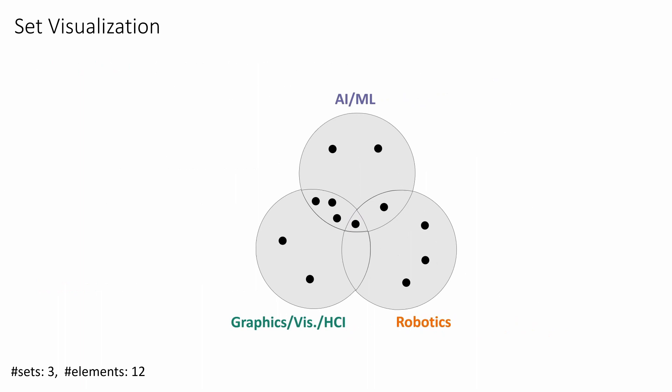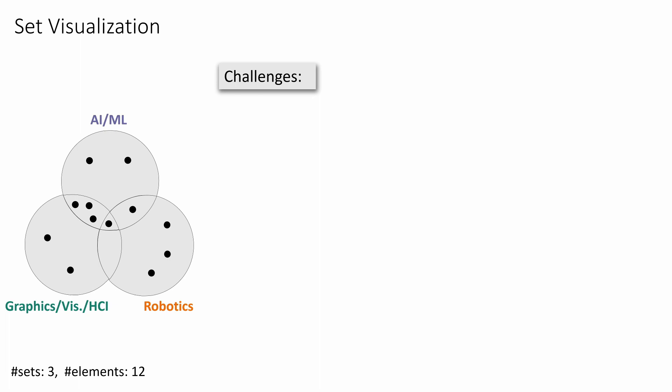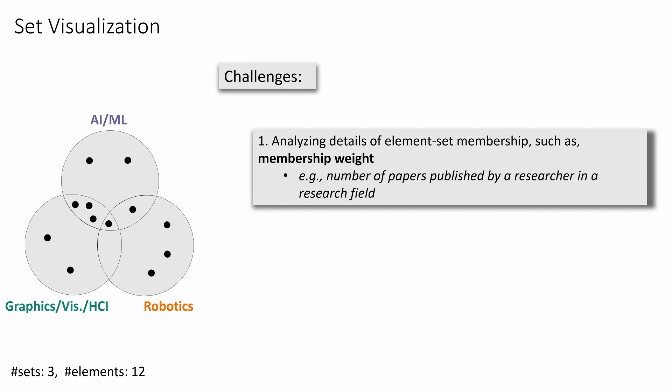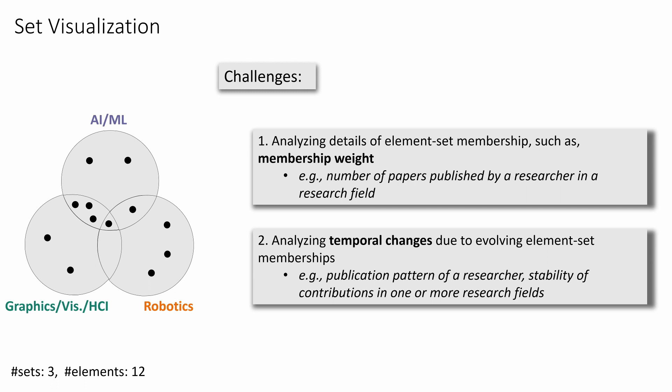Set visualizations like Venn diagrams face several challenges while visualizing membership of elements. The first challenge lies in analyzing details of element set membership, such as membership weight — determined by the quantitative attribute that defines membership. In our example, the number of papers published by a researcher in a research field determines the membership weight. The second challenge lies in analyzing temporal changes due to evolving membership of elements in sets — for example, analyzing the publication pattern of a researcher or the stability of contributions in research fields. We address these challenges using layered set intersection graphs.